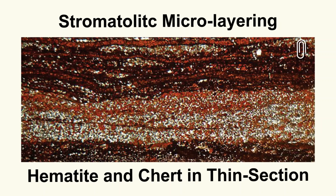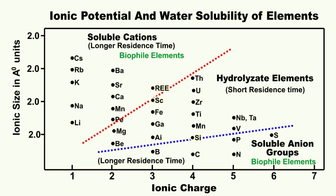Welcome to the 24th episode on my channel. In the last few episodes we looked at the geochemical parameters like pH, Eh, redox potential and ionic potential which should have controlled the precipitation of the Sturtian or lower Cryogenian FeMn oxide deposits.